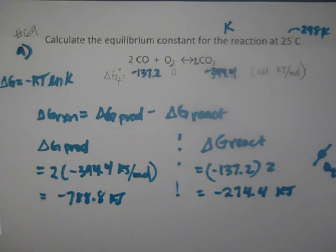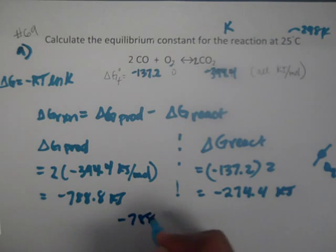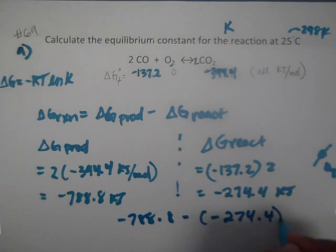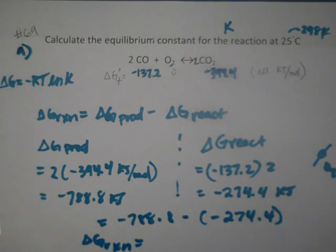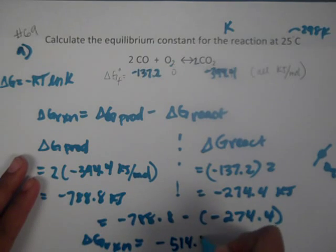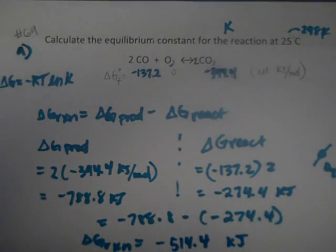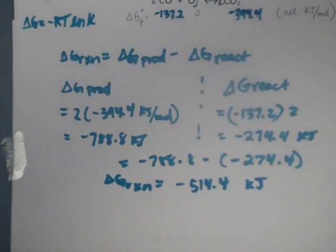Now that we have products and reactants, we do products minus reactants: negative 788.8 minus negative 274.4. Adding the negative of that gives us a final delta G of reaction of negative 514.4 kilojoules. Remember, this is not the end of the problem — we still have to find K.